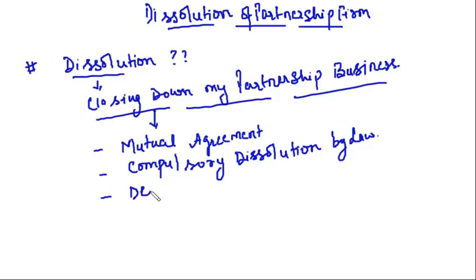Another reason is the death of a partner. If there are only two partners in a partnership firm and one of them dies, it will no longer be a partnership firm, because the very basic meaning of partnership requires two or more persons. So when one of two partners dies, that also leads to dissolution of the partnership firm.